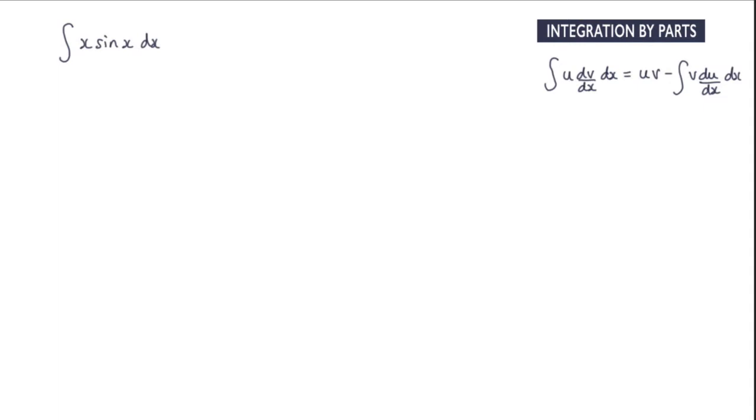The first step is to decide which of these functions is u and which is v. So we've got an x and we have a sin x. Now if we let u equal x, that's actually quite easy to differentiate and it does make the function a little bit easier.